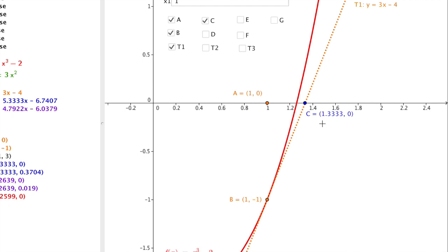So we now locate f(1.333) on our function, and that's that point D that we see. And we repeat the process. We need to find the tangent at that point, and the tangent at that point is this blue line.